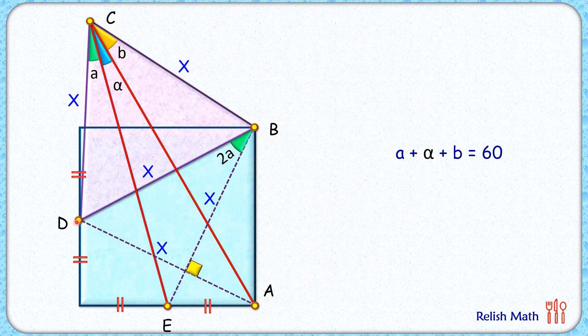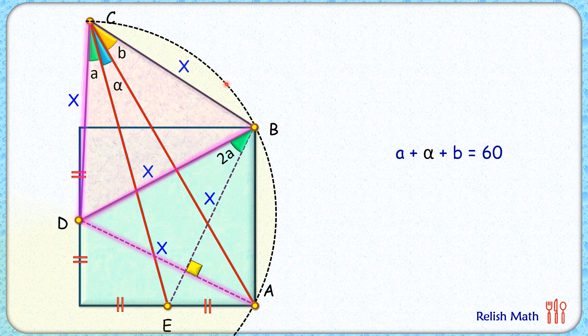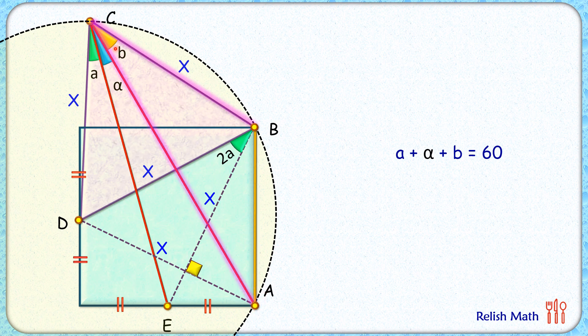Same way if we'll concentrate on point d we'll find the length cd, db and da are x centimeter each. So from point d as the center we can construct a circle passing through these points c, b and a. Now in this circle ba is a chord which is sustaining an angle of b degree at point c. If the angle at the circumference is b degree, then by theorem angle at the center will be twice that, or this angle here will be 2b degrees.